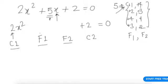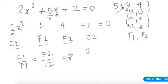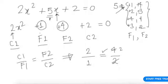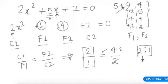Now let's try f1 = 1 and f2 = 4. c1 is 2, f1 is 1, f2 is 4, and c2 is 2. Are they equal? The ratio 2 to 1 equals 4 to 2 — yes, they are equal. The ratio is 2 to 1, so we get the first factor which is 2x + 1.